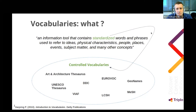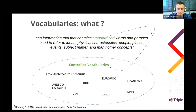Vocabularies can be either domain-based, like GeoNames, AAT, MeSH, and others, or be domain-agnostic — more generic and abstract — like UNESCO, DDC, Library of Congress Subject Headings, etc.